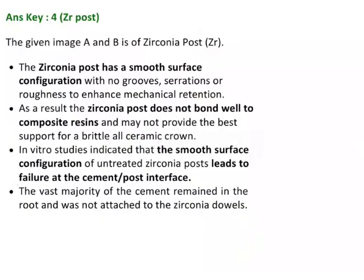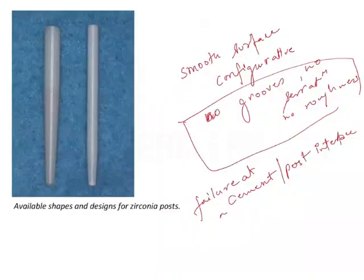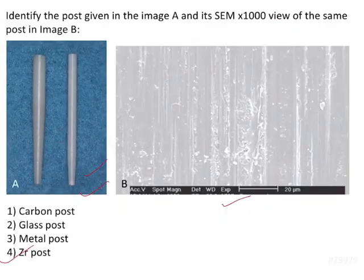This question is about identifying the zirconia post. It has a smooth surface configuration — that is the key identification feature. The important MCQ point is that failure occurs at the cement-post interface. You should be able to identify this as a zirconia post from its SEM magnification image. The answer would be option 4: zirconia post.